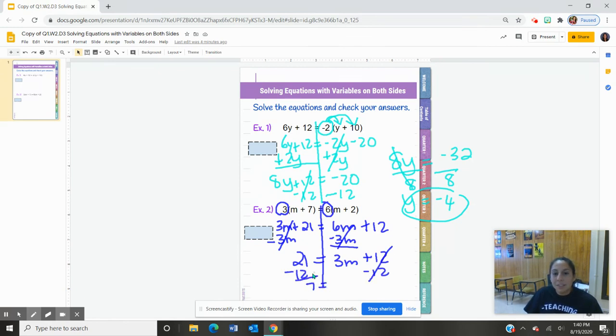So we end up with 9 is equal to 3m. And lastly, divide by 3, divide by 3, so m is equal to 3.